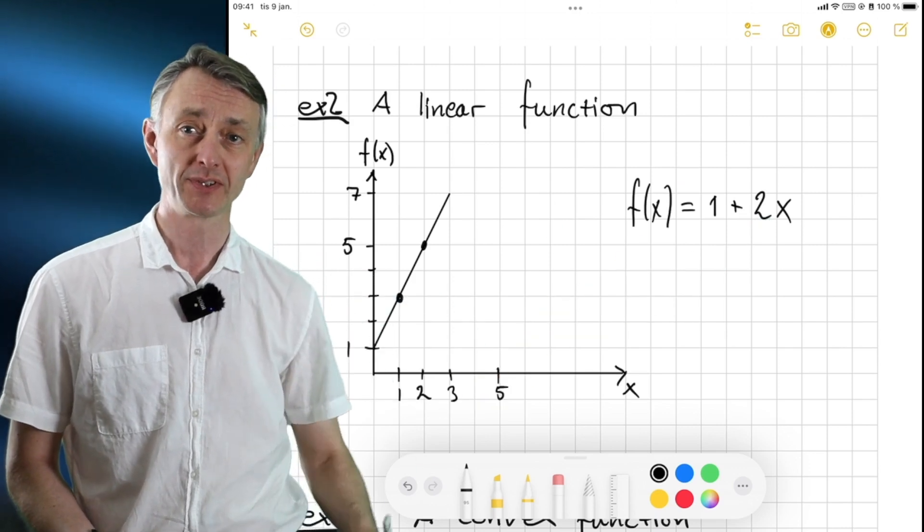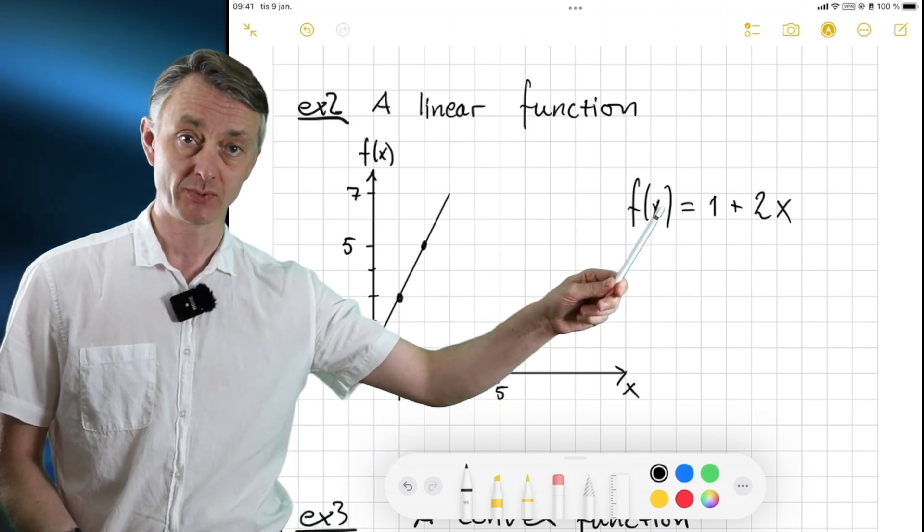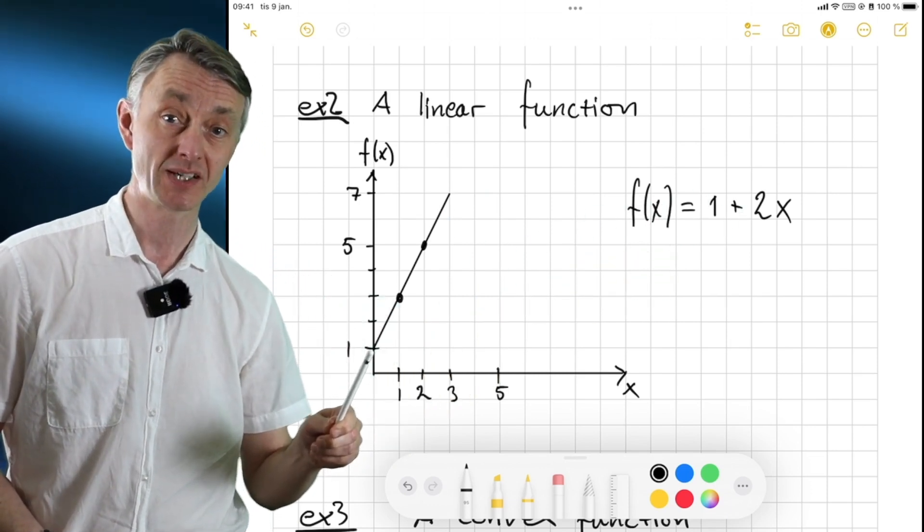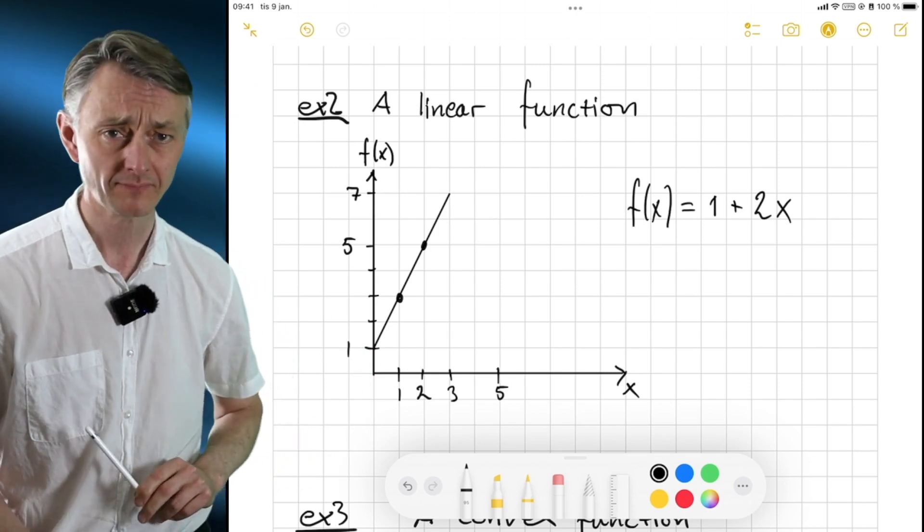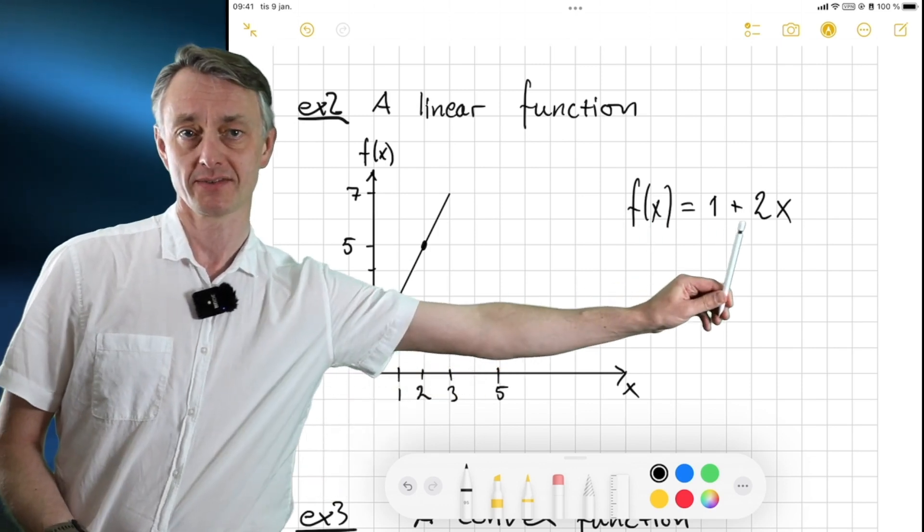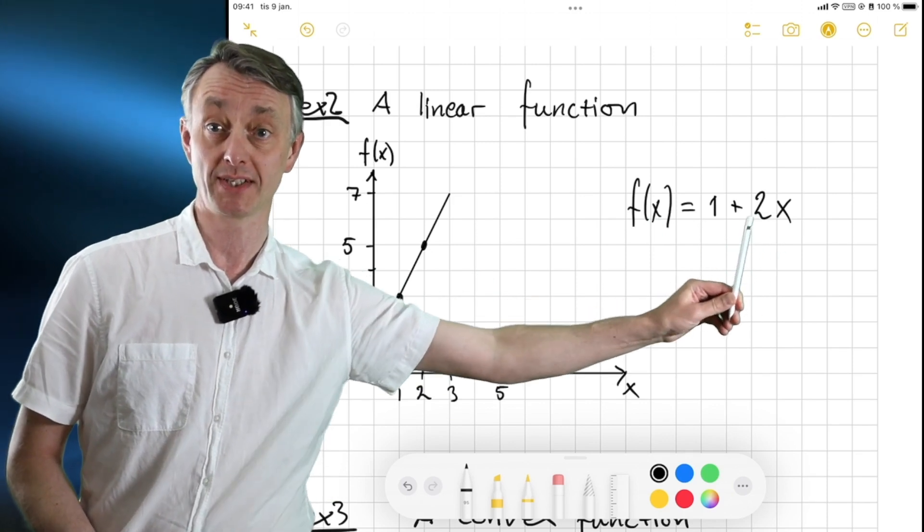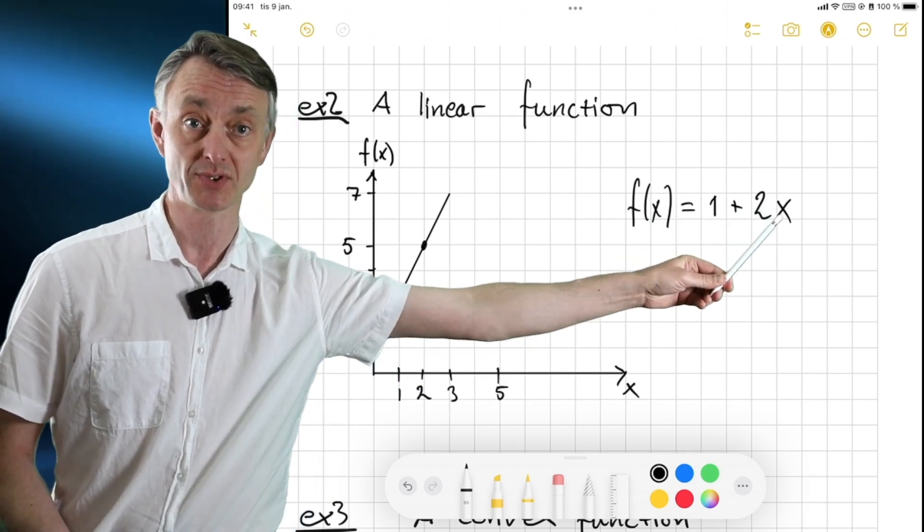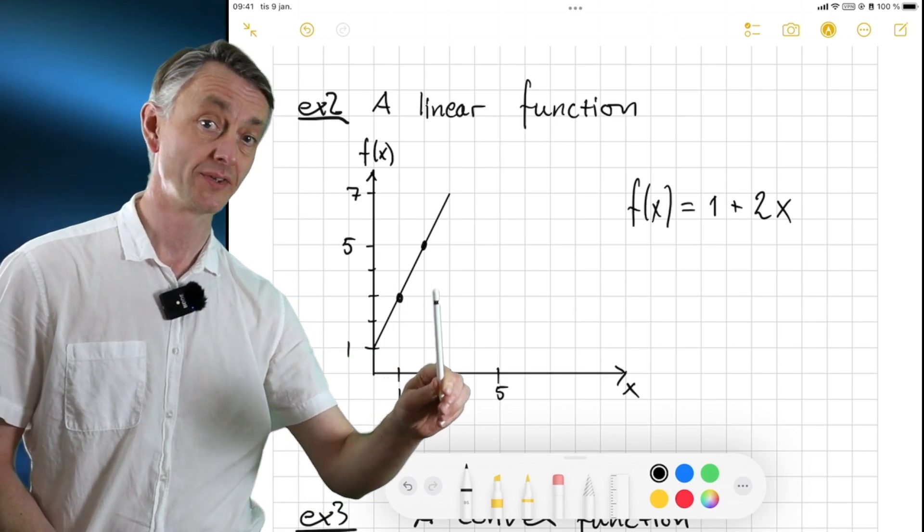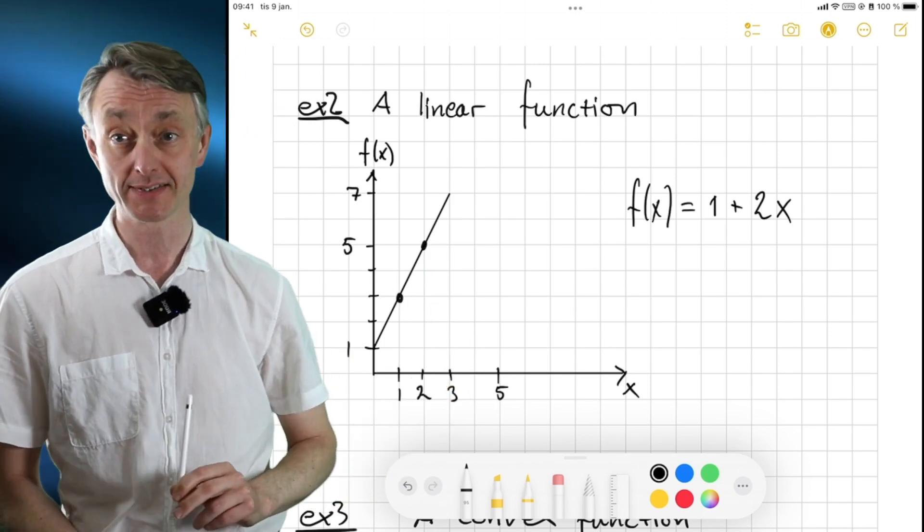For example, the value of this function at x equals 0 is going to be 1. Hence, that is why the intercept is here at 1. Now we can see that I've drawn this function here. So for every step to the right, we take 2 steps up, hence the 2 times x. One step to the right, 2 steps up, 1 to the right, 2 steps up, etc.